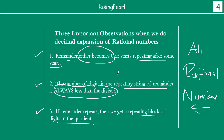And finally we notice that if the remainder repeats, then we get a repeating block of digits in the quotient. Now these three observations are not only applicable for the examples we have seen, but they are applicable for all rational numbers. If you can imagine any number in this form and try to expand it decimally, it will always satisfy these three properties. This is a remarkable property of rational numbers.